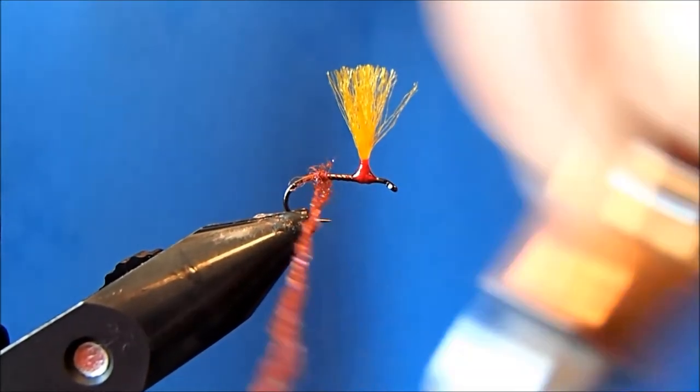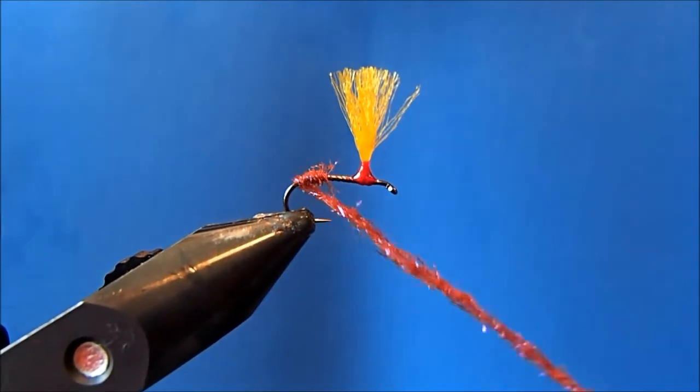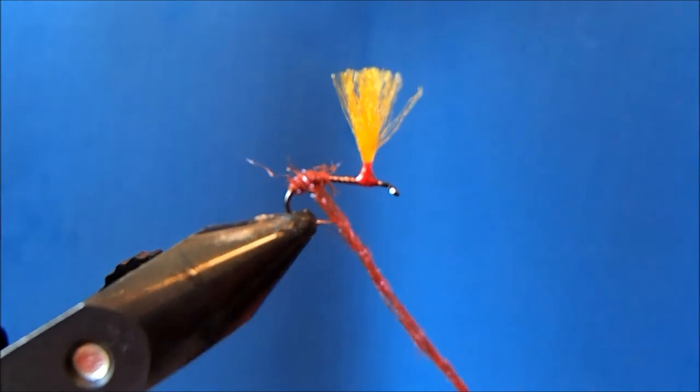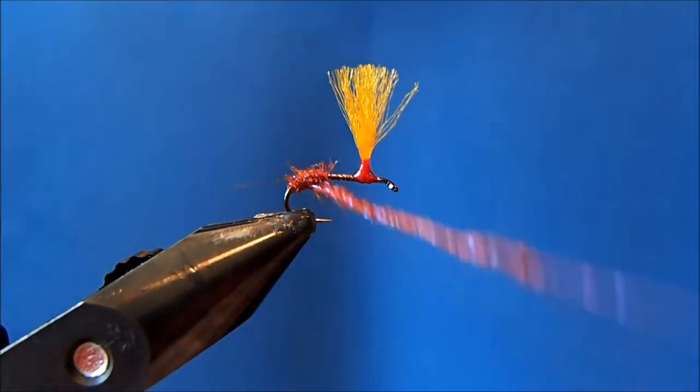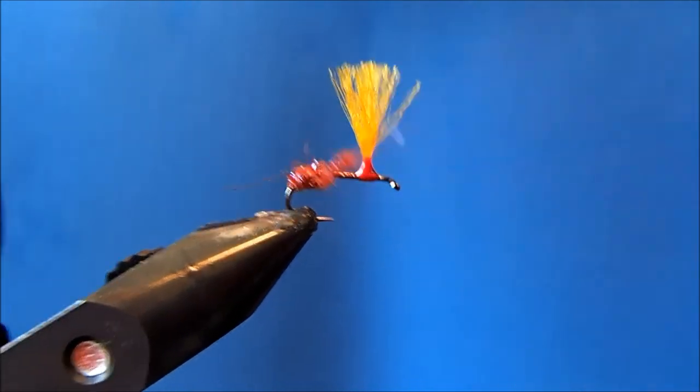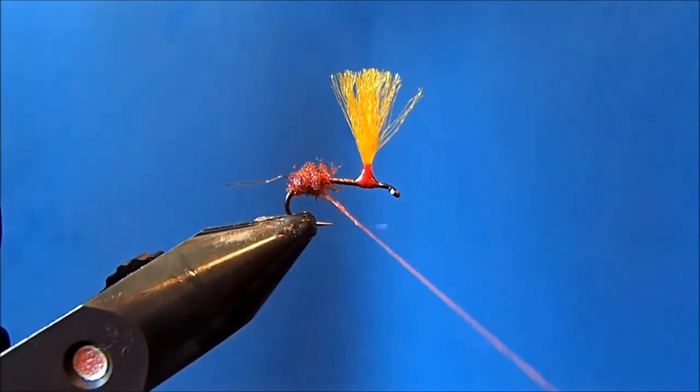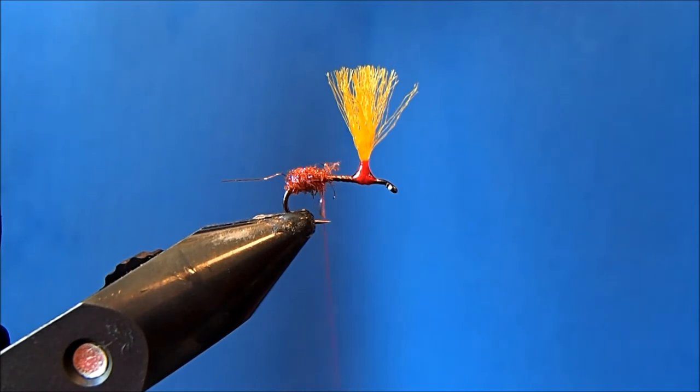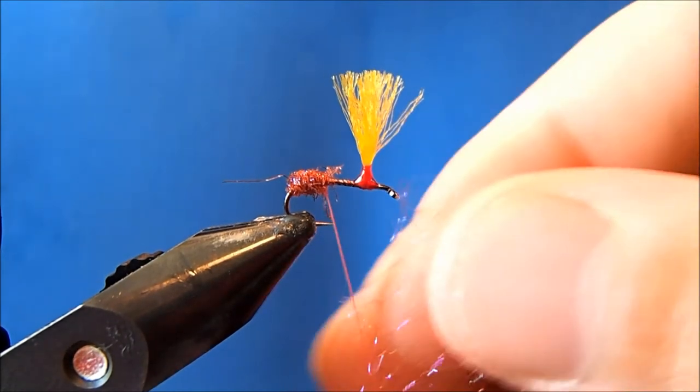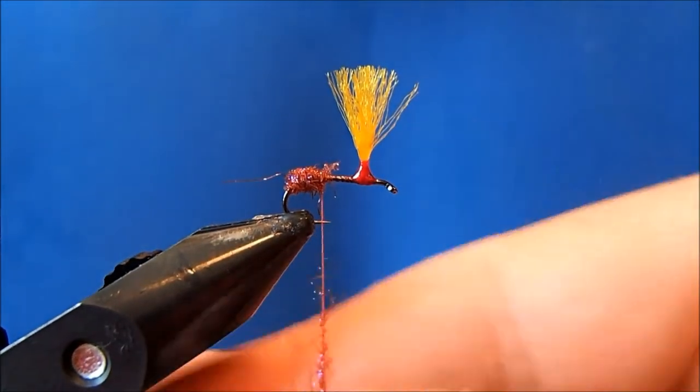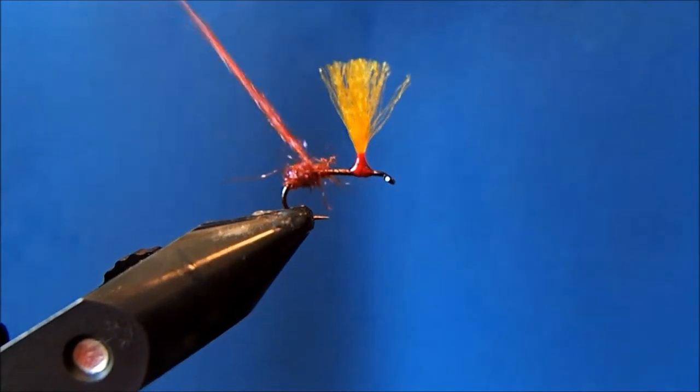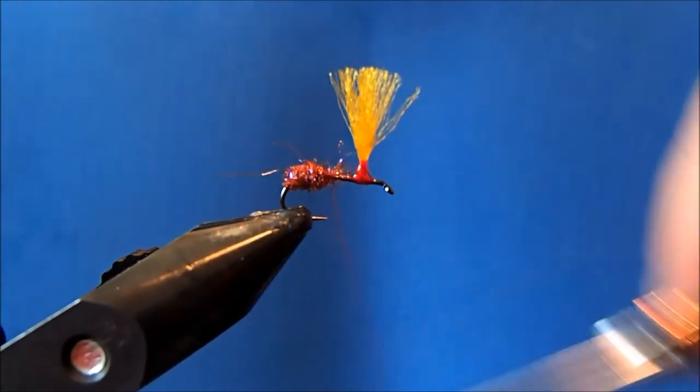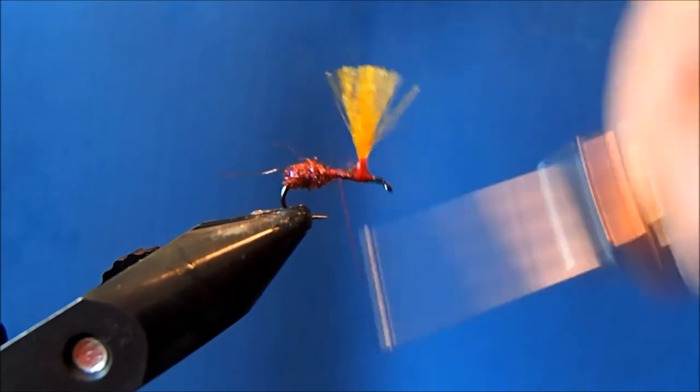Now I'll just start advancing my thread down and my dubbing. I take this beyond the bend in the hook, and I do that because I want to have that curved shape to the butt section here. As I continue to wrap, I'll make some twists and I'm going to take one more pinch just to finish that up.